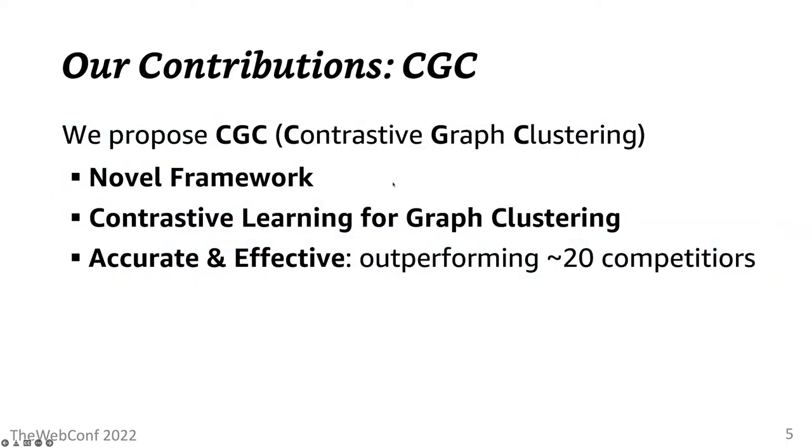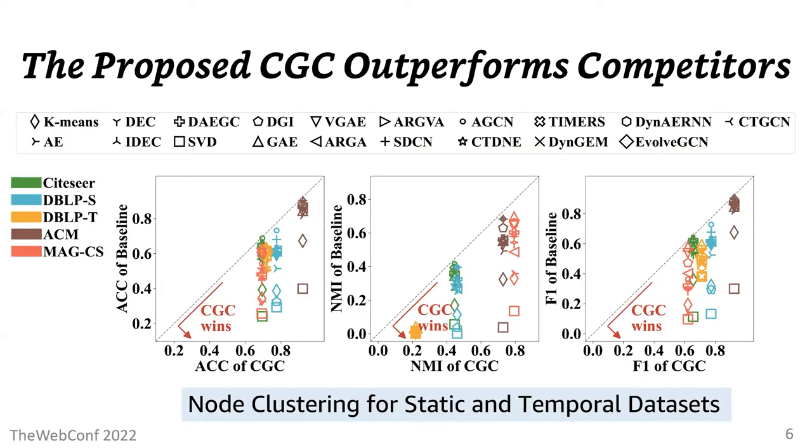In this paper, we propose a method named CGC, contrastive graph clustering, which is an effective novel deep graph clustering framework based on contrastive learning. As this figure shows over multiple static and temporal datasets, the proposed method consistently outperforms competitors achieving up to 28% higher node clustering accuracy.